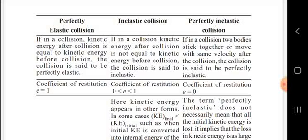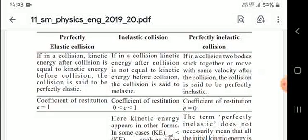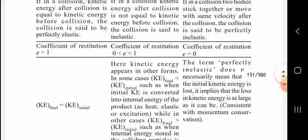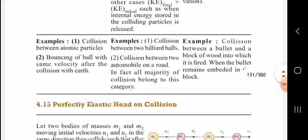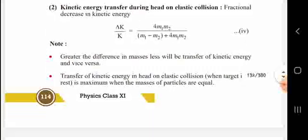If the kinetic energy after collision is not equal to the kinetic energy before the collision, it is an inelastic collision. In a perfectly inelastic collision, two bodies stick together and move with the same velocity after collision. The fraction decrease in kinetic energy is given by ΔK/K = 4m₁m₂/(m₁+m₂)².